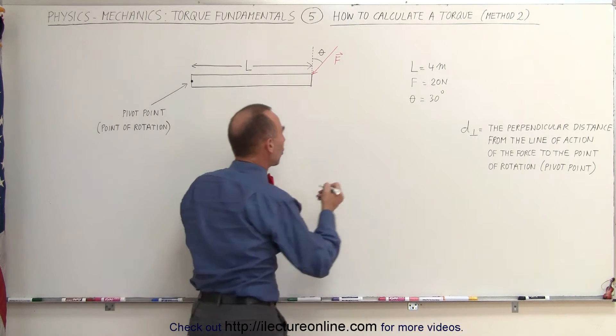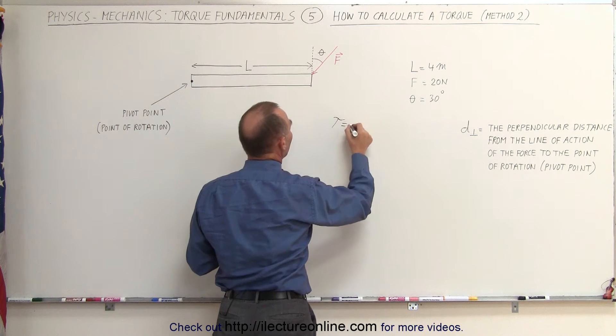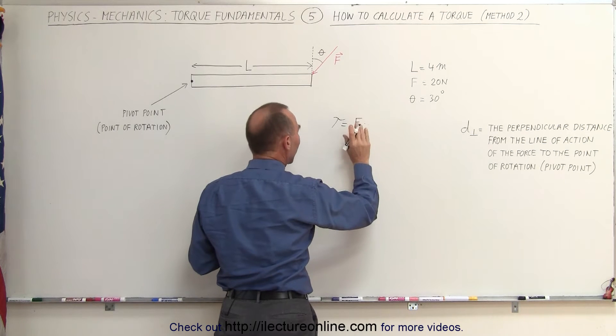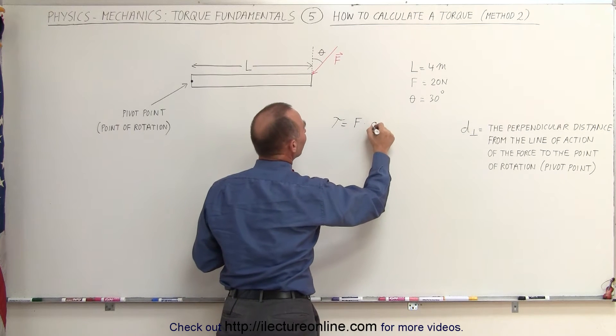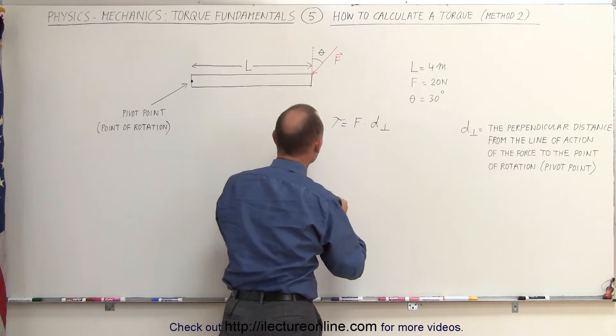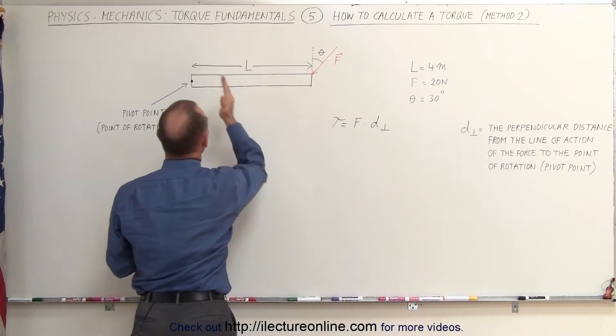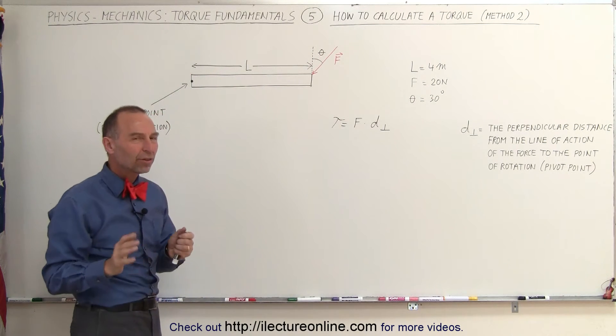We can say that the torque can be calculated by multiplying the magnitude of the force times the perpendicular distance from the line of action of the force to the pivot point. What does that mean?